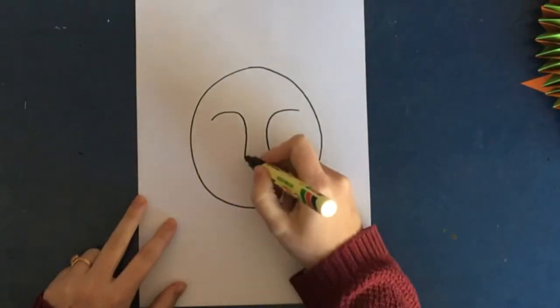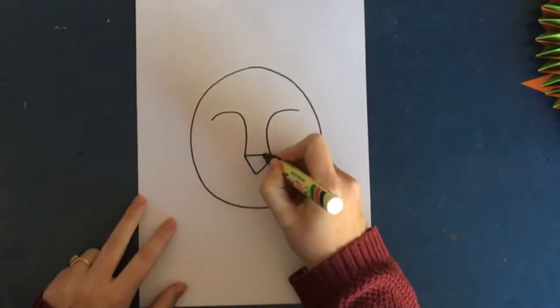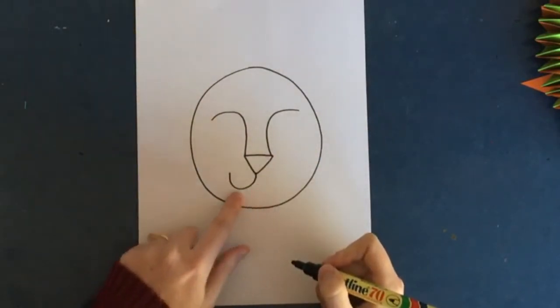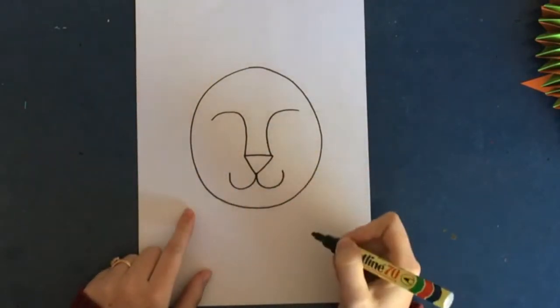When you've finished that, you must make a gap at the bottom there to make the nose part, and then you're going to do a little kitty cat mouth which is just a U-shape on one side and another U-shape on the other side.